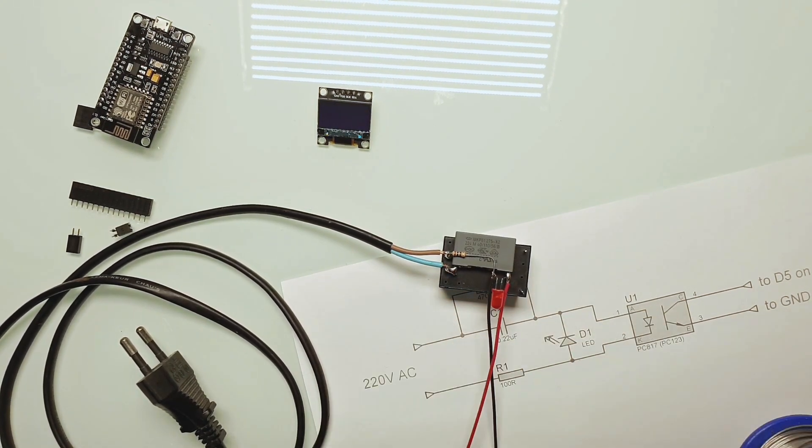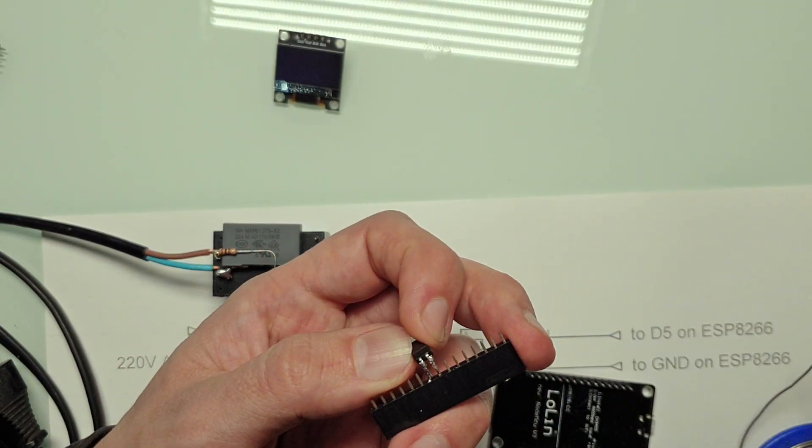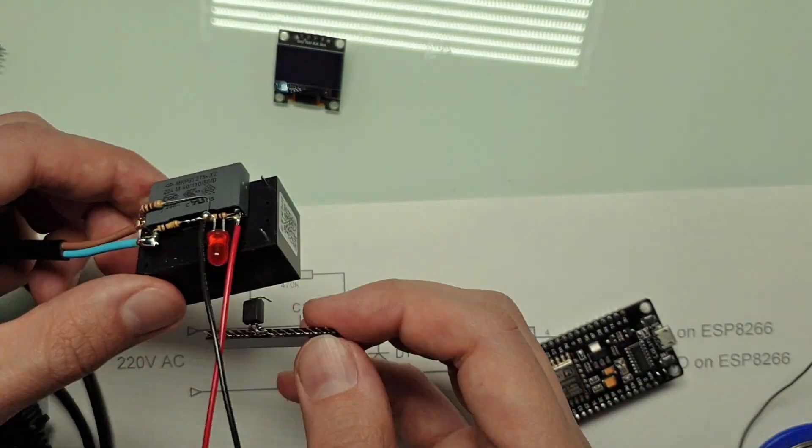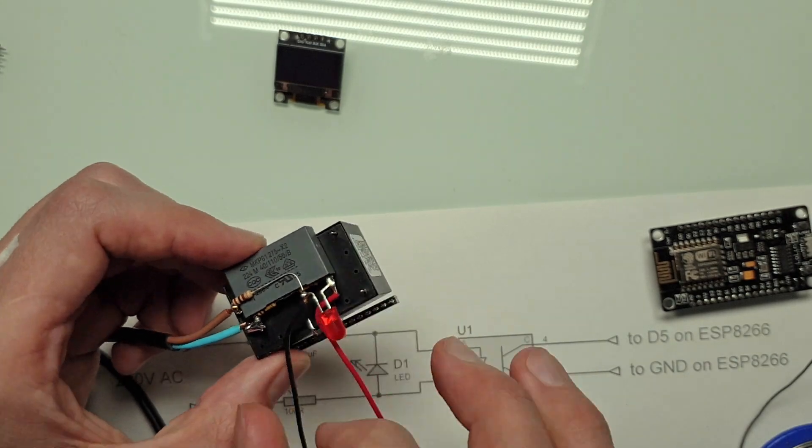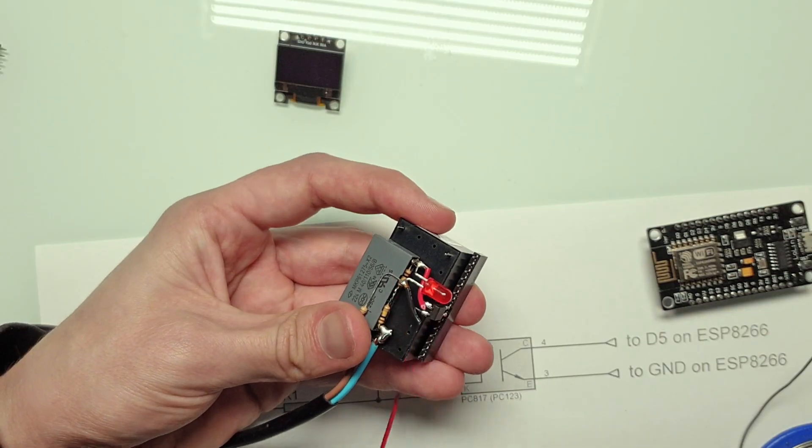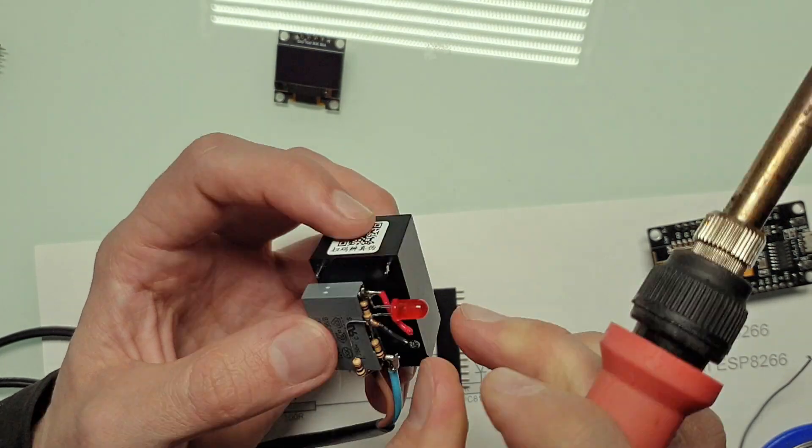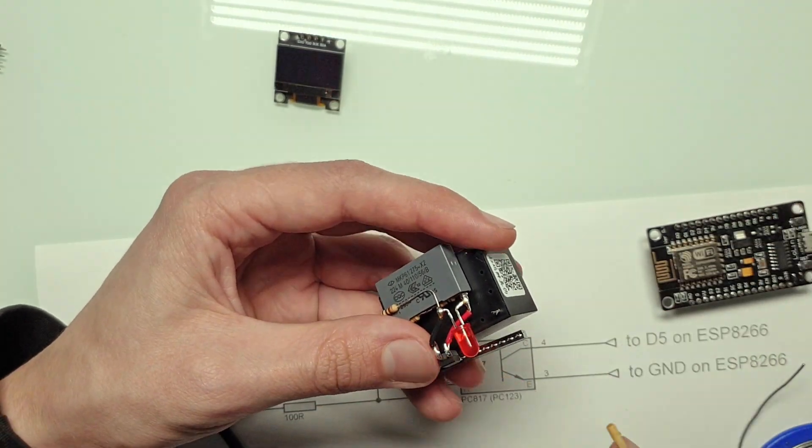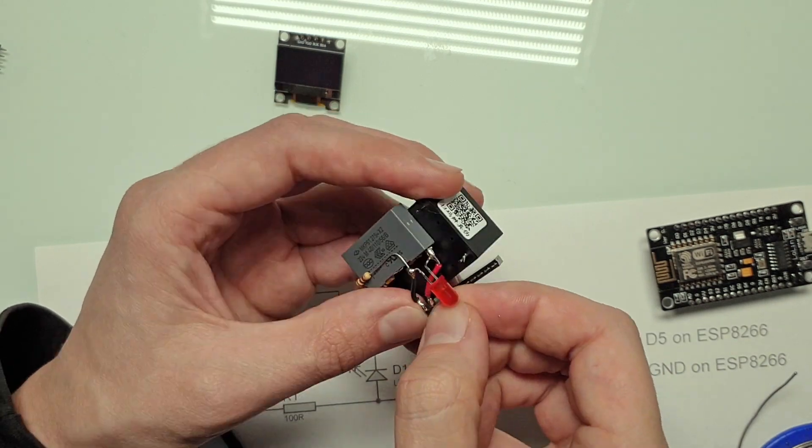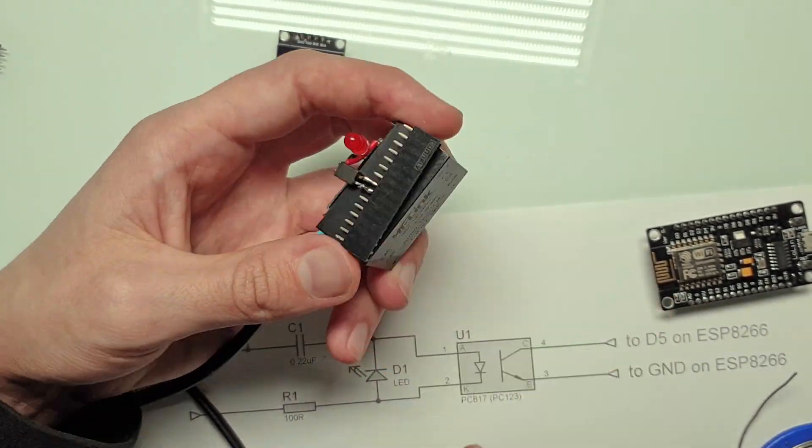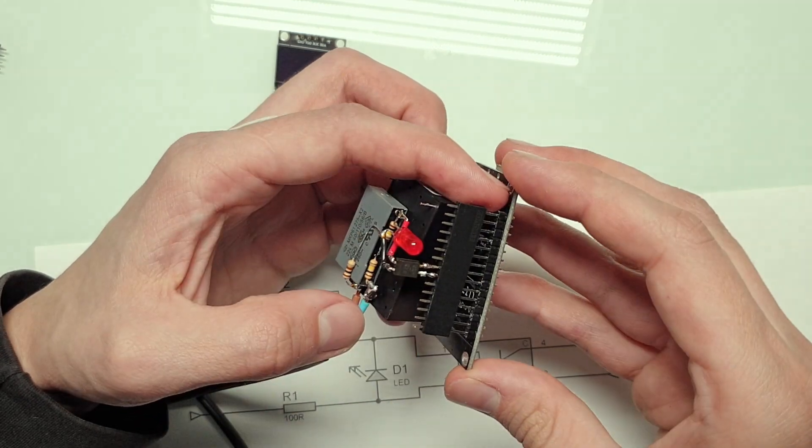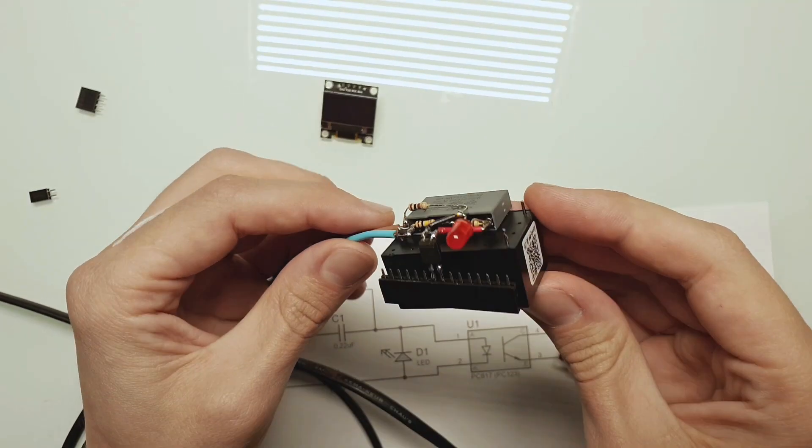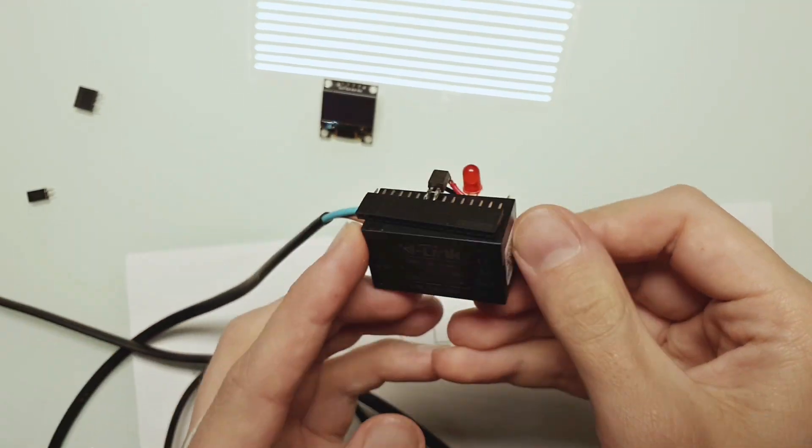Now it's time for the optocoupler itself. The optocoupler will allow the ESP8266 board to detect the oscillations in the power grid, but at the same time it will electrically insulate the ESP8266 board from the high voltage of the power grid. The output of the optocoupler is connected to the pin D5 and the ground pin of the ESP8266. Now let's solder the optocoupler to the LED. ESP8266 is going to be programmed with internal pull-up resistor at pin D5, so I don't need any external pull-up resistor for that pin. Now let's do a quick test. And let's continue, and be careful not to touch the device when it's connected to the power.